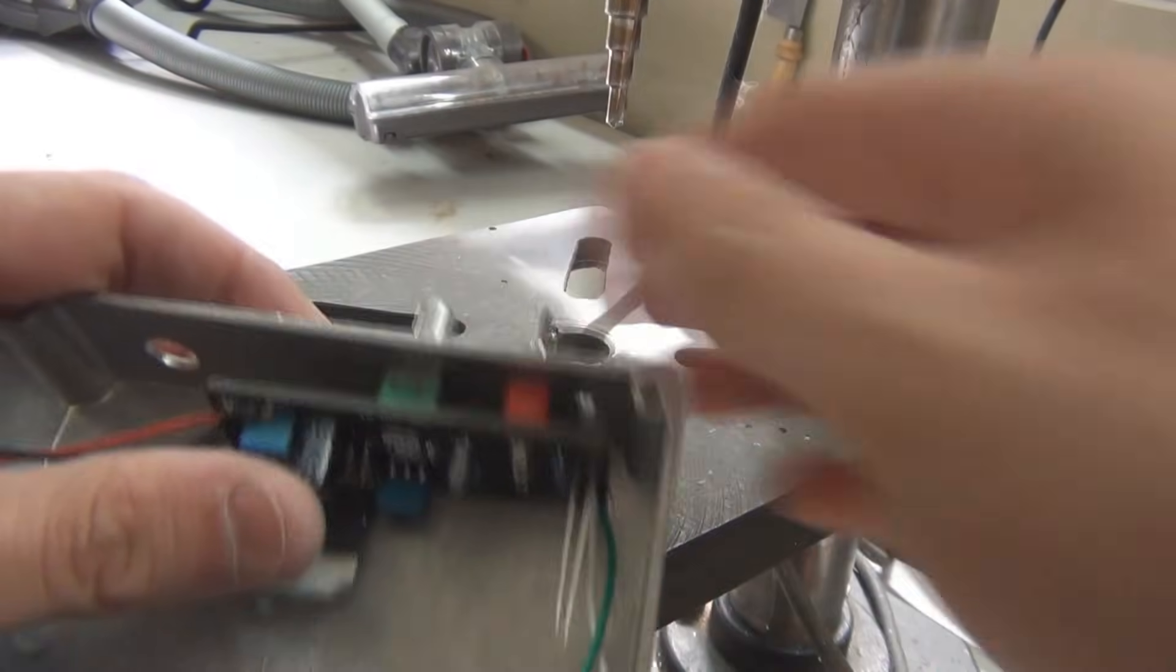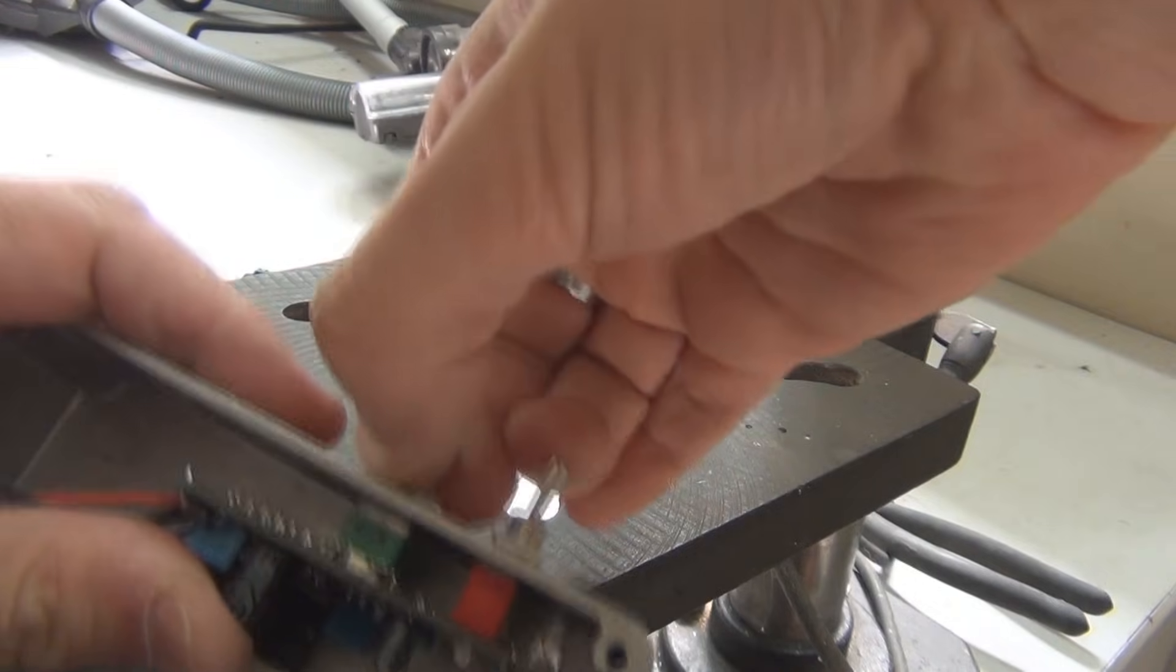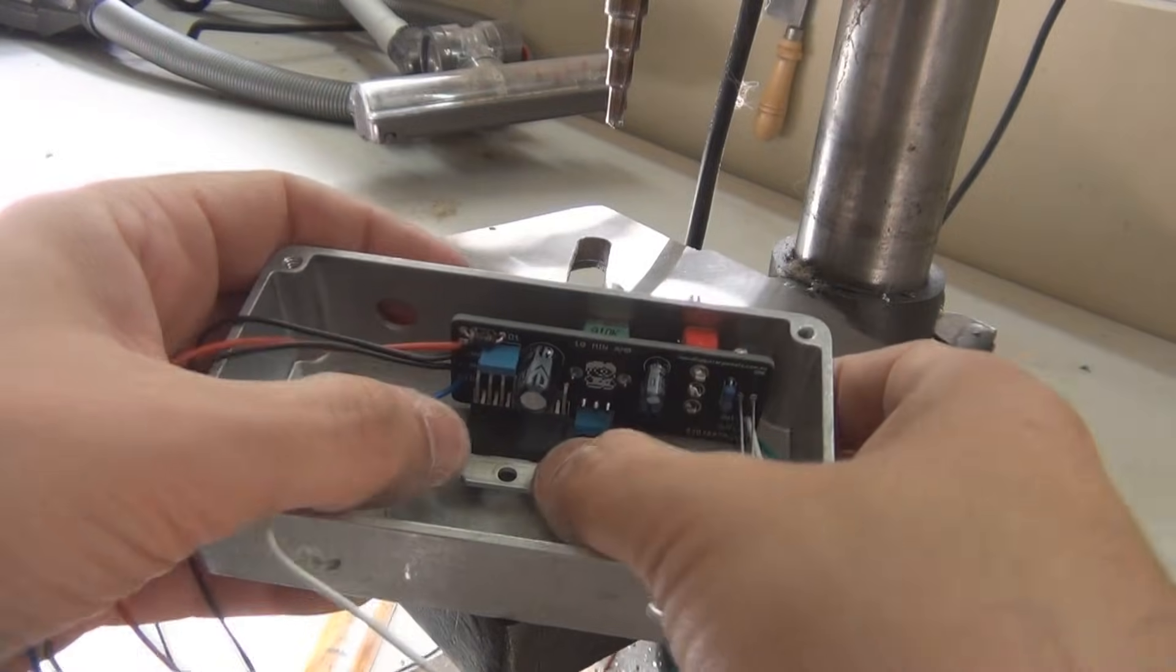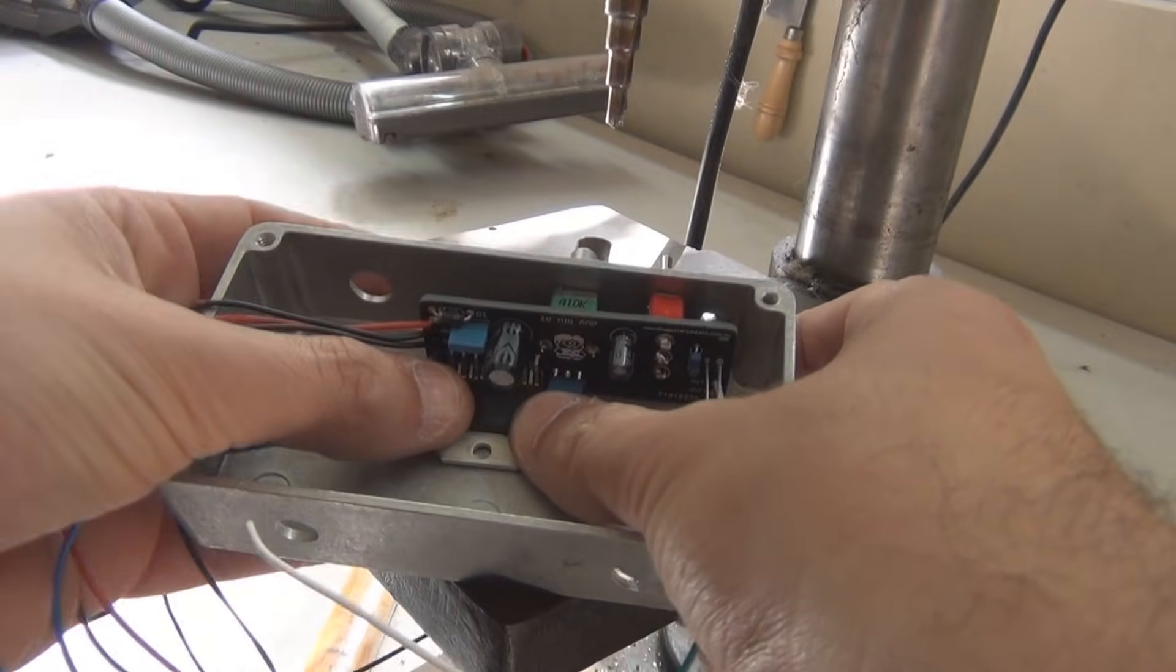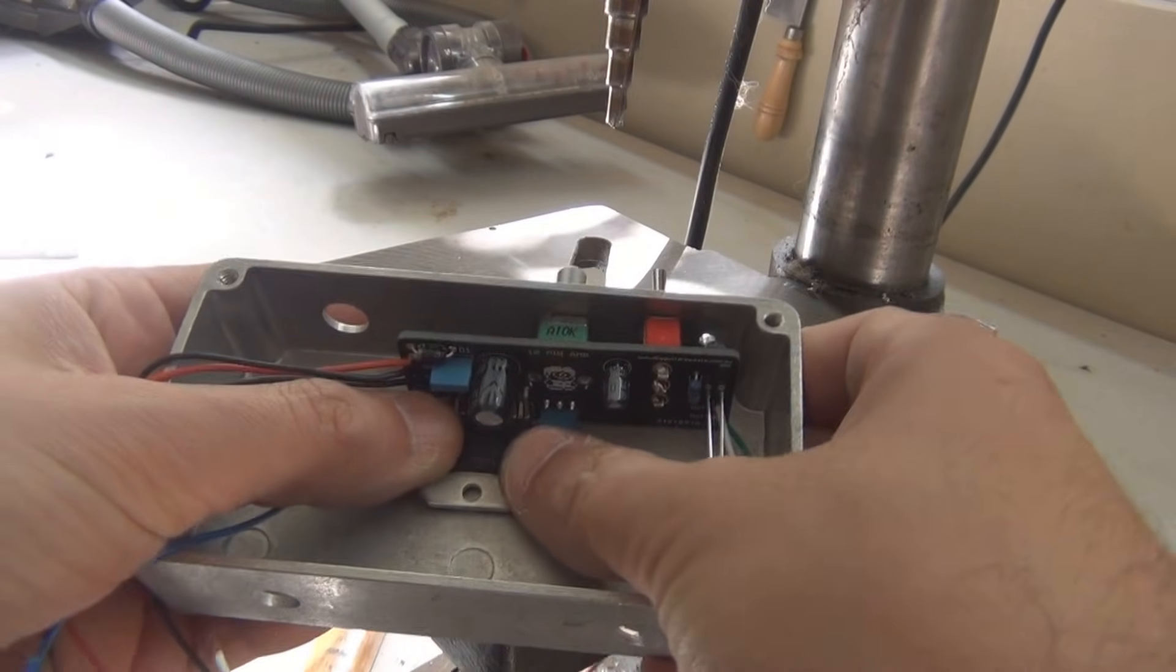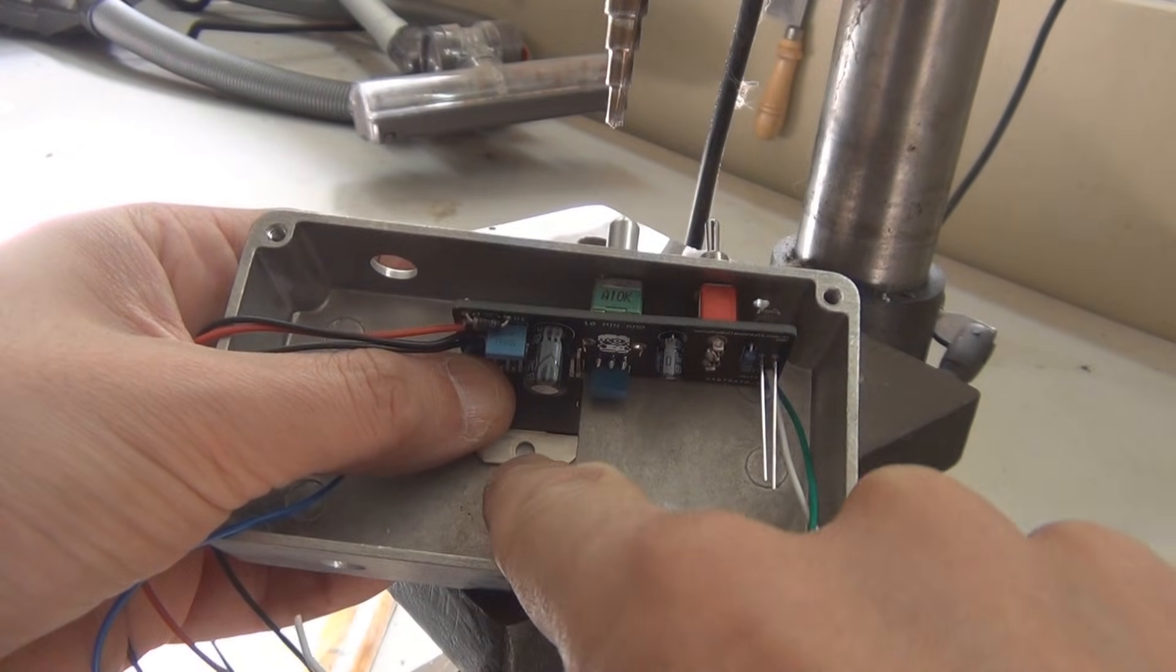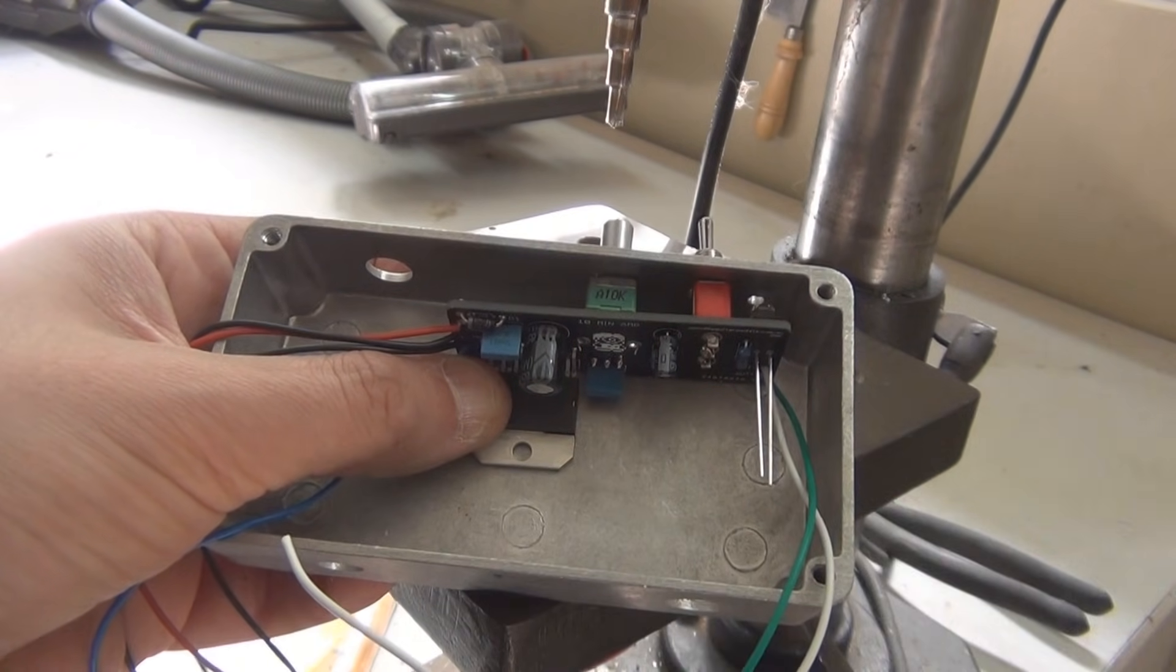So while we're at the drill press it's a good idea just to test fit this PCB into the enclosure. As you can see this heat sink is now not touching the bottom so that really does need to be screwed down into place. So what I'm going to do is just get it into the right spot, put a little dot where the hole will go and then drill the hole for the heat sink as well.